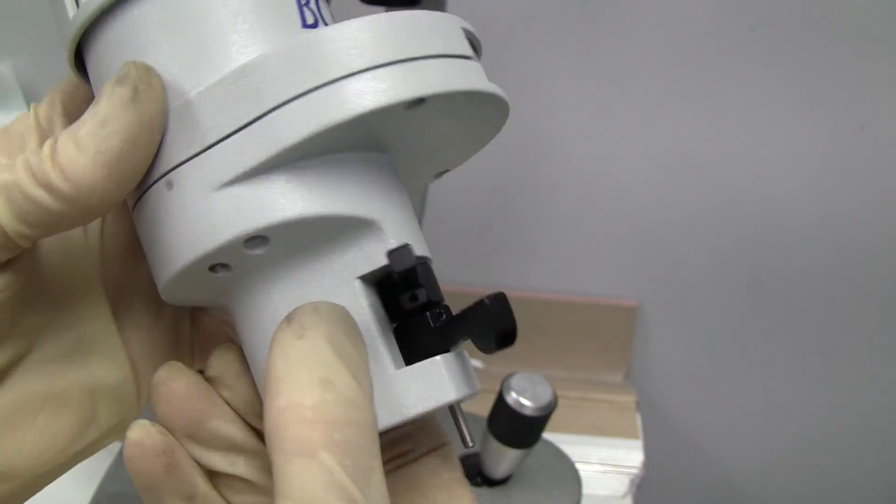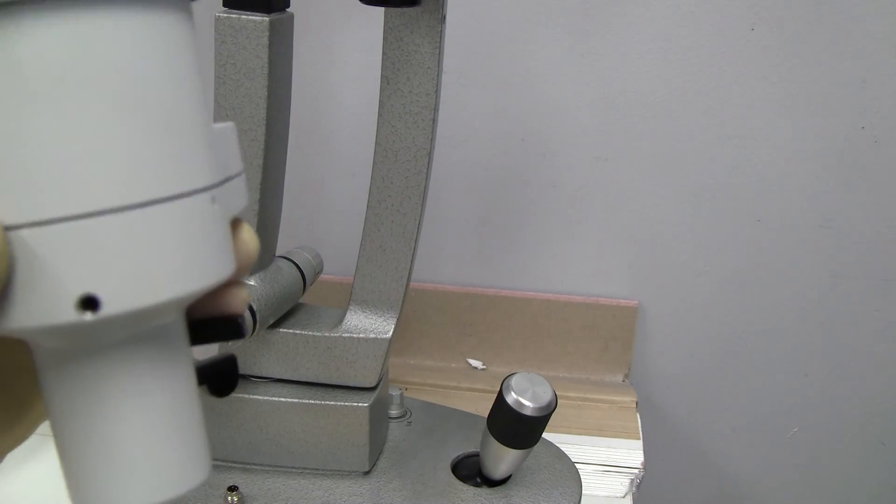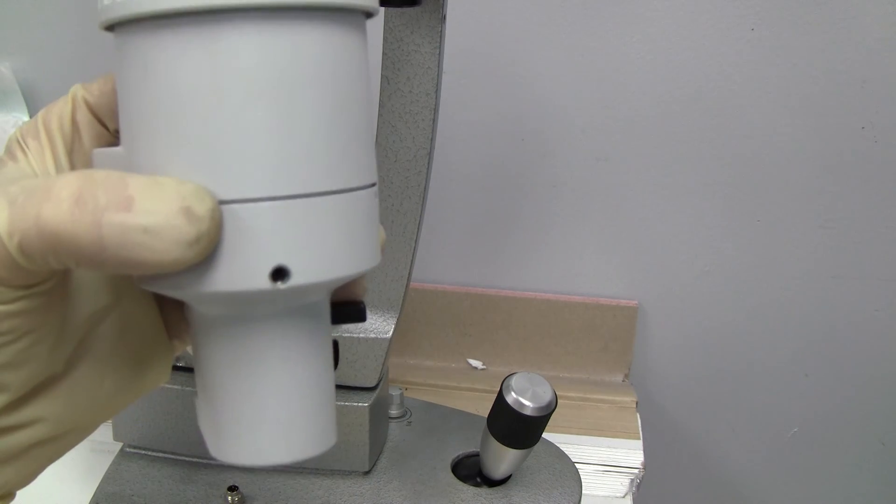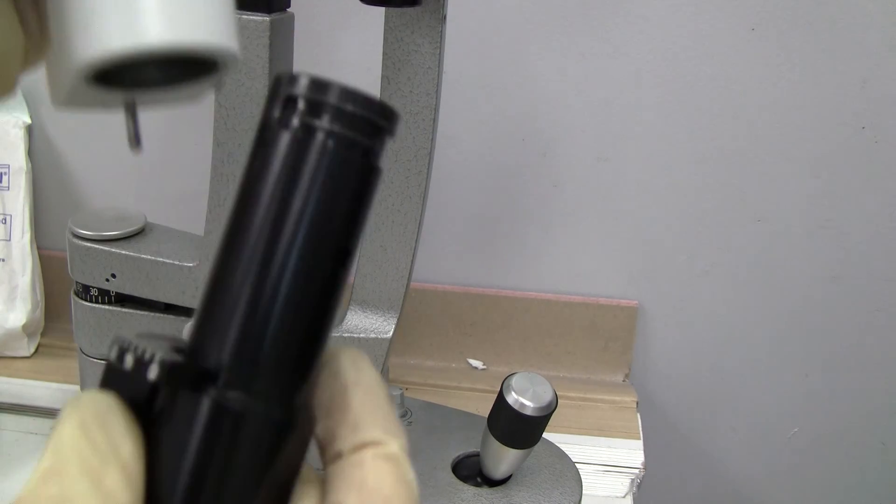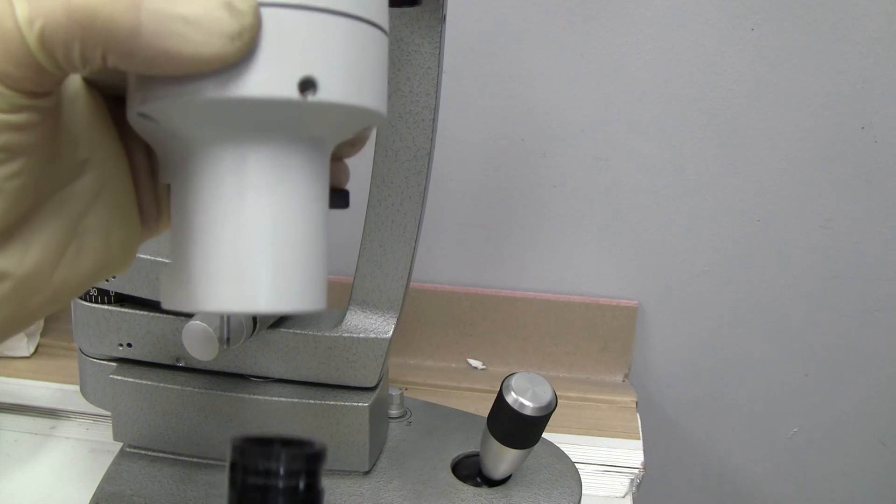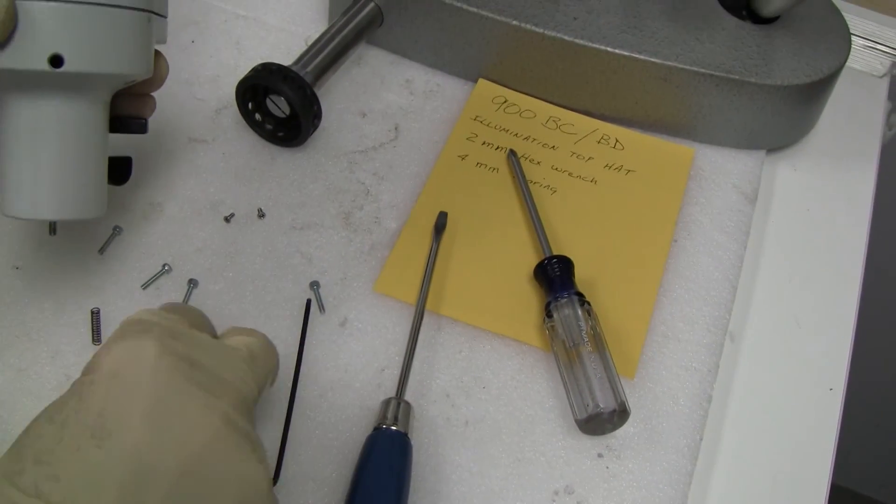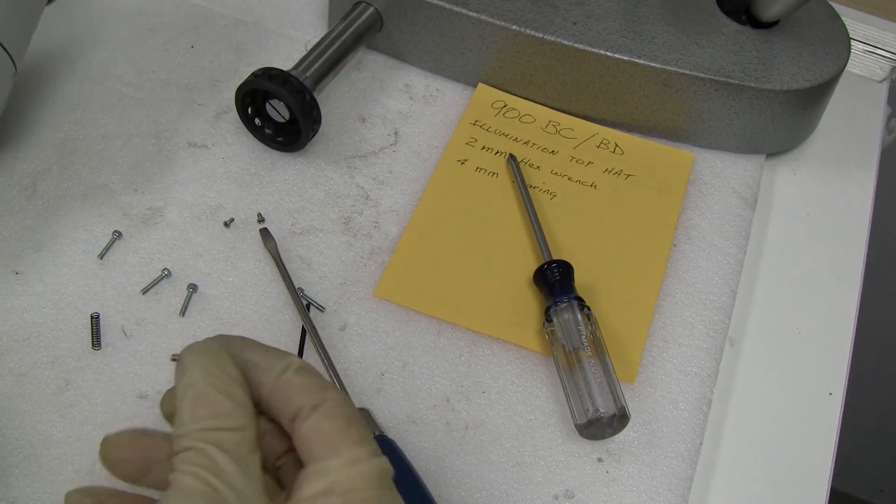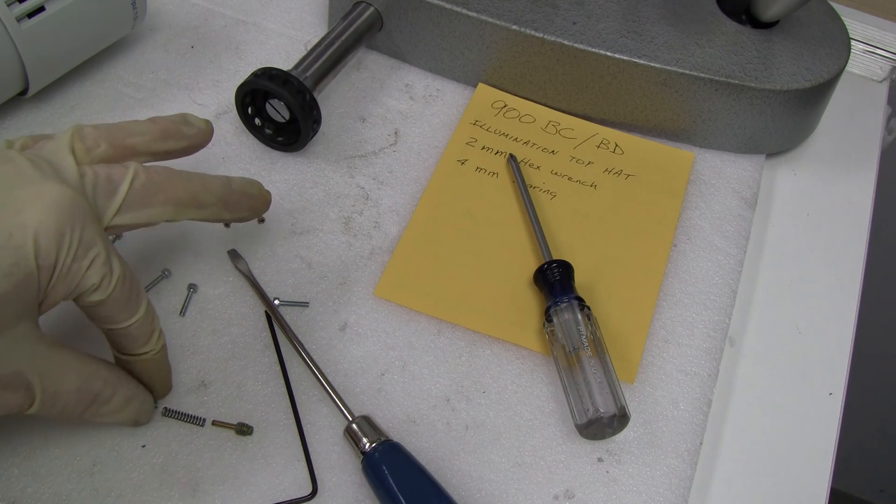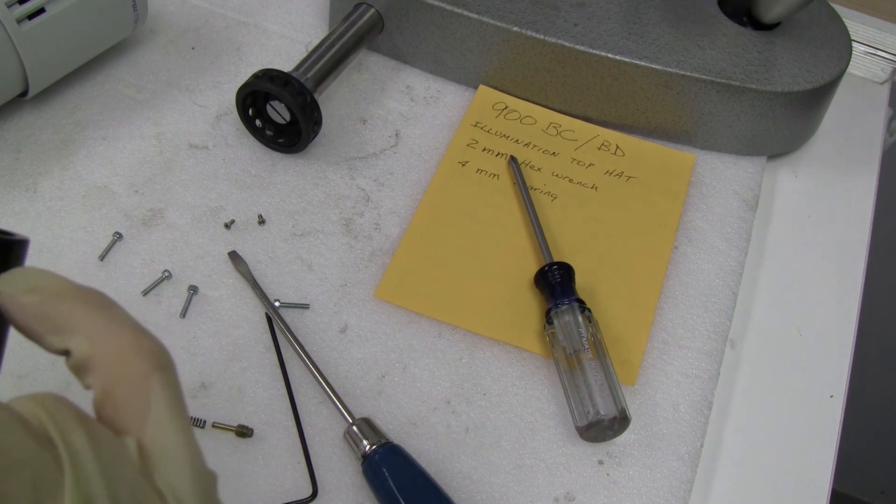Take all those four out. If you wanted to take your illumination head off, there's a lock screw in here with a bearing that keeps it on your tube. And to get that out, we have this screw.